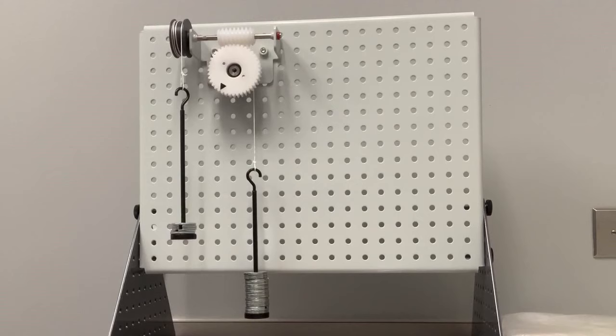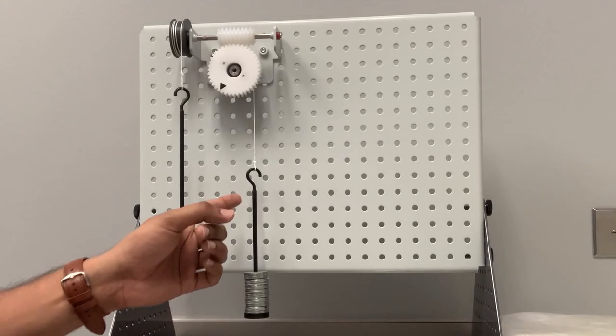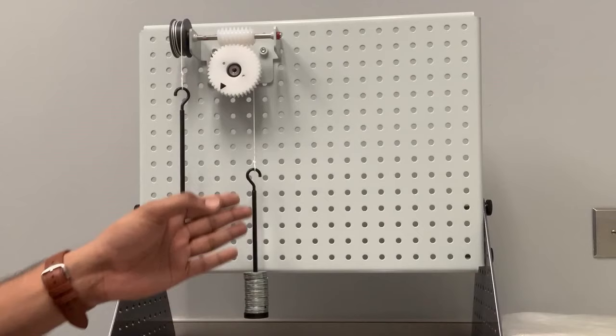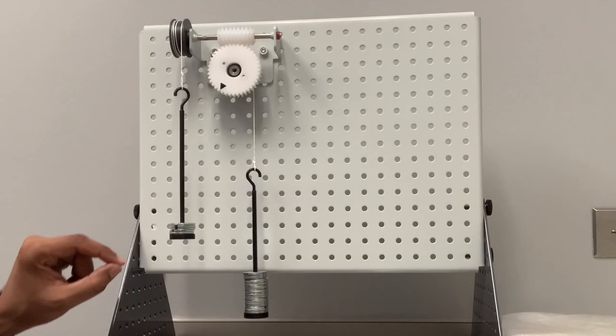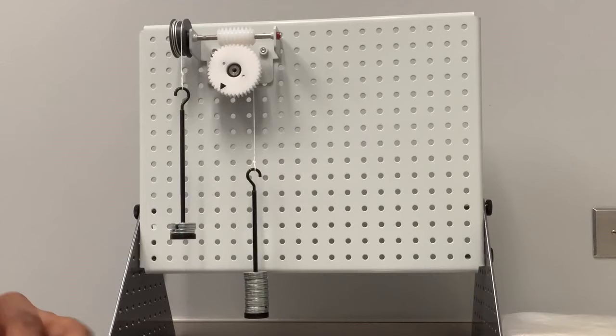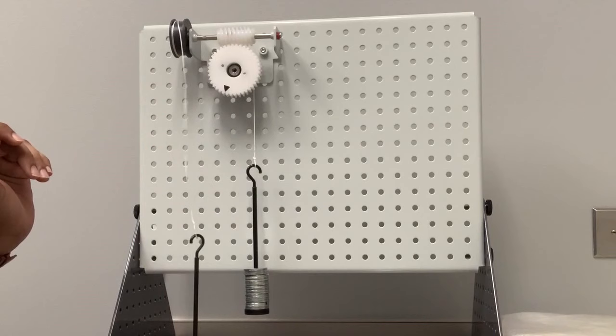Now it's time to do our test. On the load side I have this hook of 10 grams and 190 grams here, so total 200 grams. On this side, this is my effort. I already put 10 grams of hook and I already put 50 grams on top of it, so total 60 grams. I am adding one more of 10 grams.